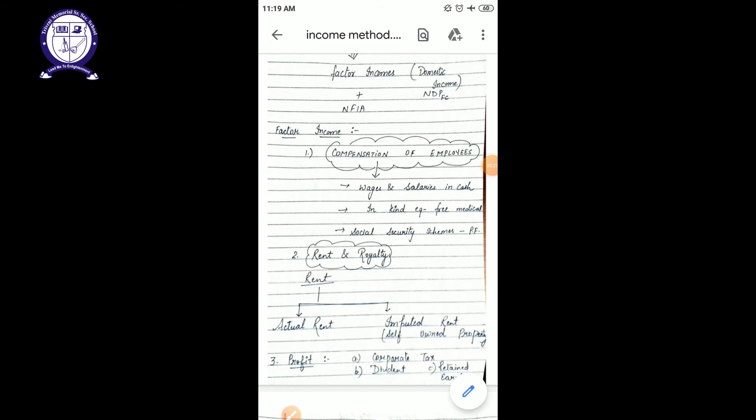For example, if suddenly there is earthquake or flood, at that time we need some kind of amount and that amount is used with the help of retained earning. Retained earning is your undistributed profit.